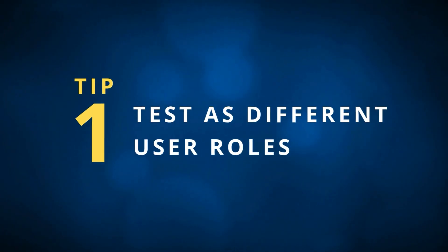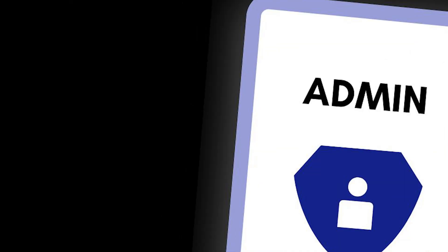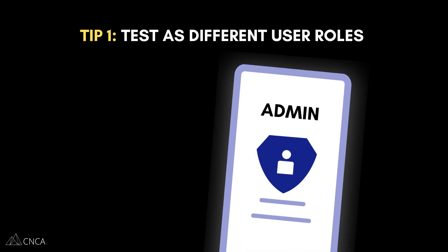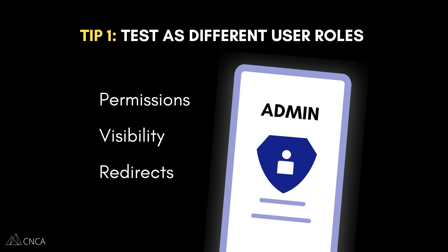Tip number one: test as different user roles. A lot of builders test everything while logged in as an all-access administrator, and that's where things go wrong. Permissions, visibility rules, redirects — they all behave differently depending on the user.